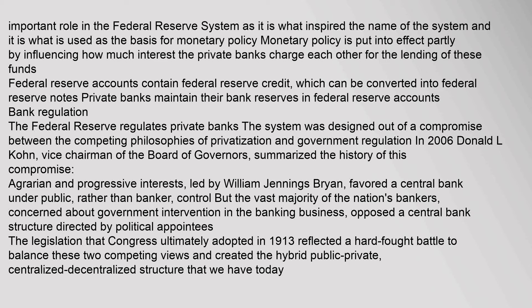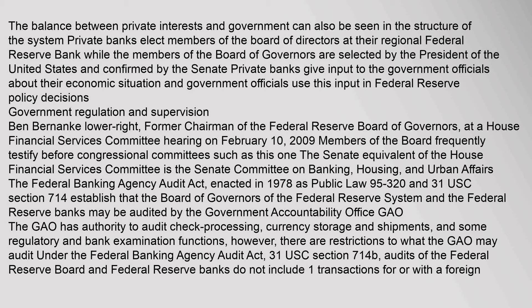The balance between private interests and government can also be seen in the structure of the system. Private banks elect members of the Board of Directors at their regional Federal Reserve Bank, while the members of the Board of Governors are selected by the President of the United States and confirmed by the Senate. Private banks give input to government officials about their economic situation, and government officials use this input in Federal Reserve policy decisions.